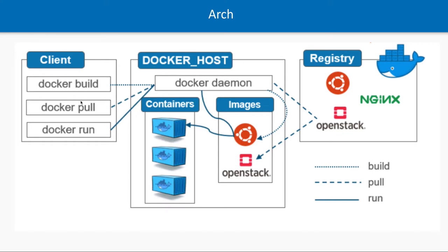If you only have a Dockerfile and not a Docker image, you run 'docker build' on that Dockerfile. The Docker daemon executes the instructions written in the Dockerfile and creates an image for you. Once the image is created, you just do 'docker run' and it creates the container. You don't need to run all three commands separately — you can merge them. For example, 'docker run redis' will check locally, pull it from Docker Hub if not available, and create a container. Similarly, you can combine docker build and docker run together.